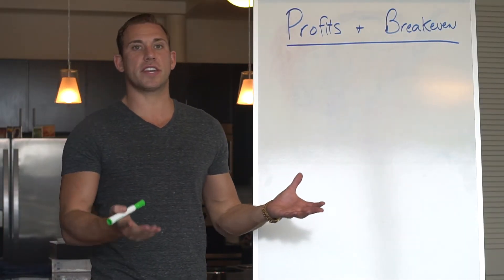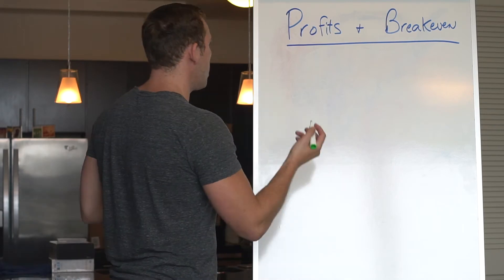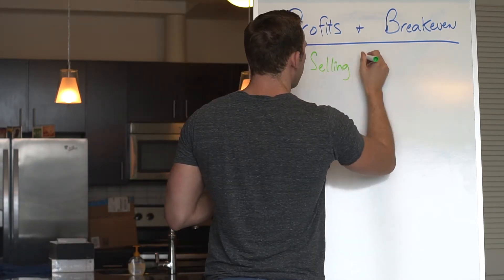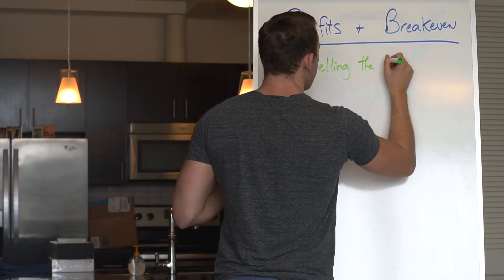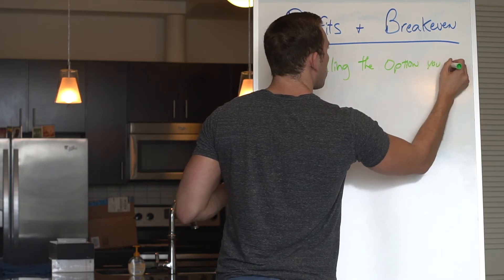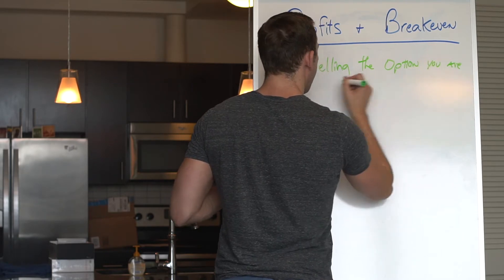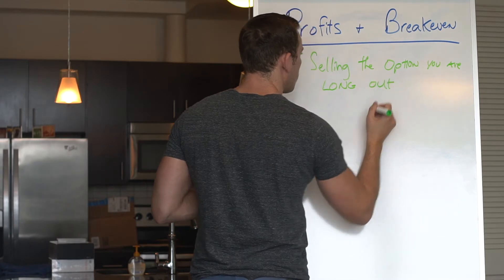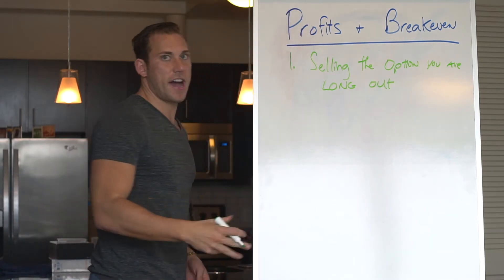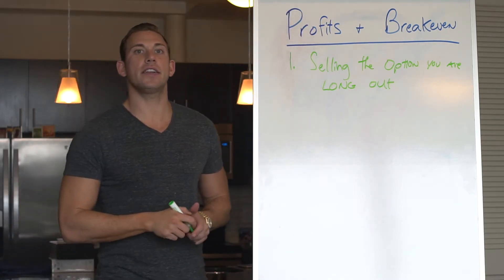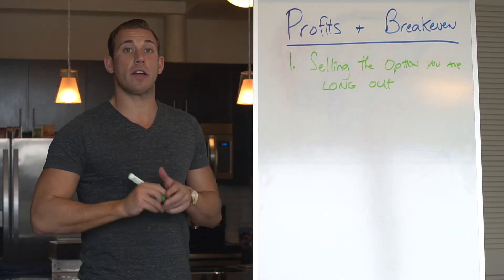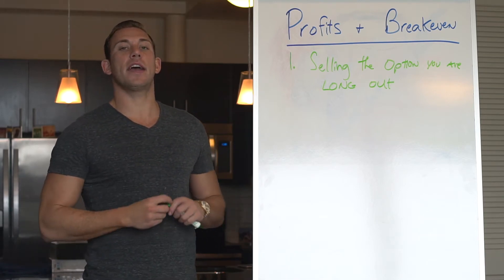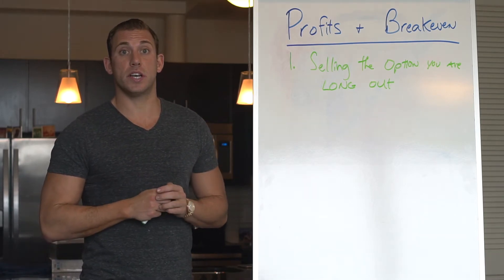There are two ways to look at profits and breakeven. Number one, selling the option you are long out. The thing about options — which is just like stocks, futures, or Forex — if I decide I want to get rid of my position at any point in time, for example, today I was long Devon Energy puts.